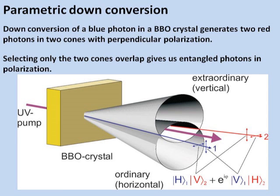The two red photons have opposite polarization and are emitted in two different cones. One cone is vertically polarized and the other is horizontally polarized. By selecting only the two cones overlap, we get photons that are in a superposition of vertical and horizontal polarization. Which means that we do not know which photon is horizontally polarized or vertically polarized, but we do know that they have opposite polarization.